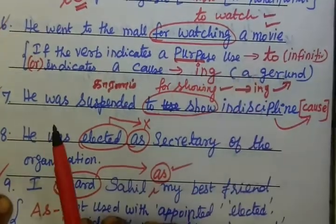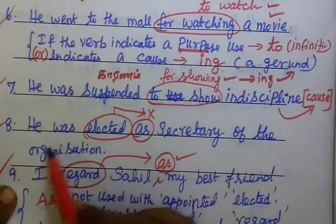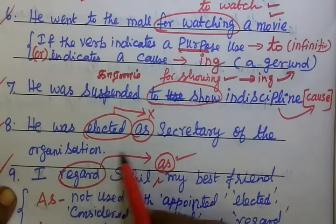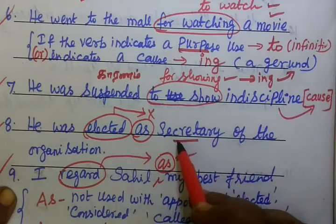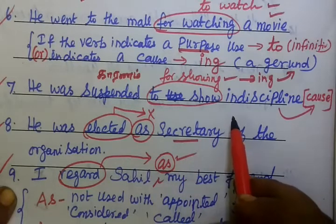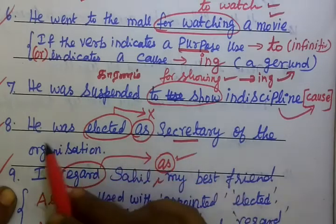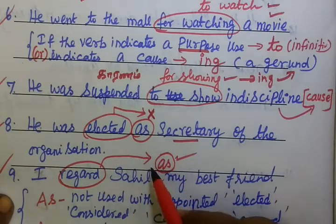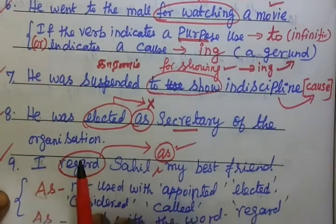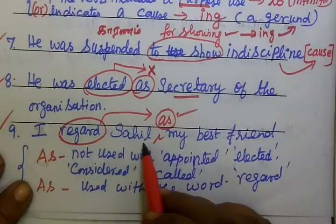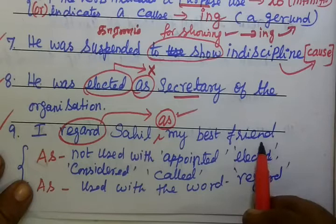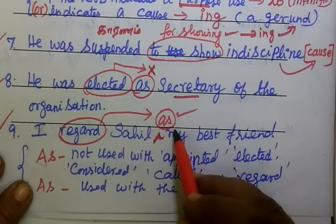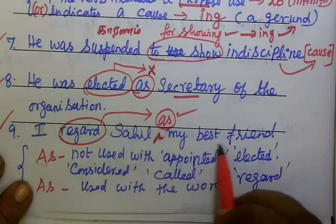See the seventh one: He was selected as secretary of the organization. And the ninth one: I regard Sogill my best friend — this is incorrect. The correct form is: I regard Sogill as my best friend.